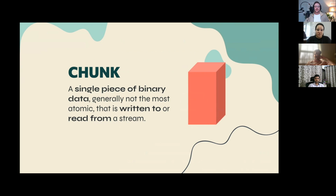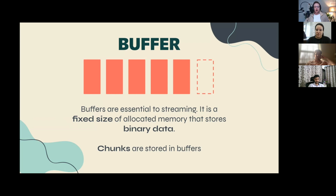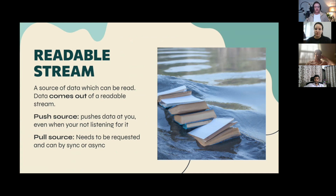A chunk is a single piece of binary data. Its size depends on many factors: the type of data being streamed, the destination, and how many stops it makes along the way — streaming chunks of video over a network looks different from streaming CSV data to a database. At the core of all streams are buffers: data structures that allocate a fixed memory location and store binary data. Chunks are what we stream, and buffers are where we store them.